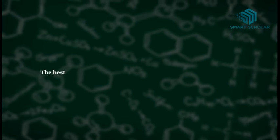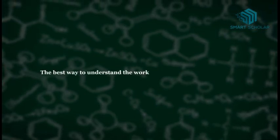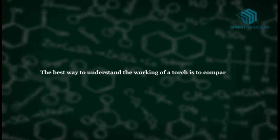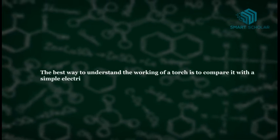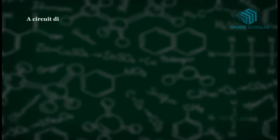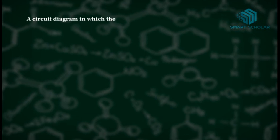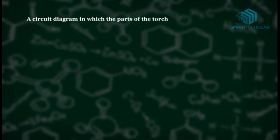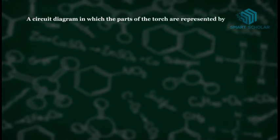Functioning of a torch. The best way to understand the working of a torch is to compare it with a simple electric circuit diagram. A circuit diagram in which the parts of the torch are represented by symbols.